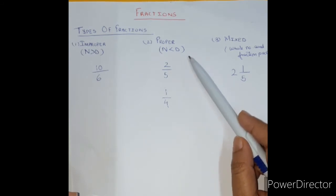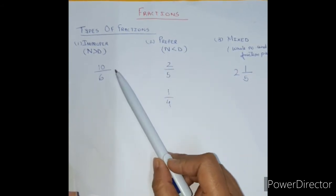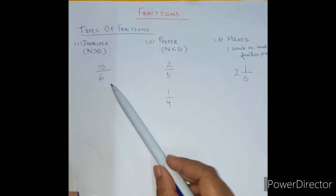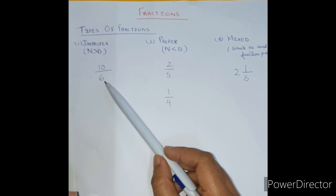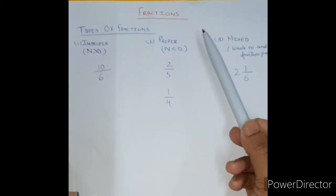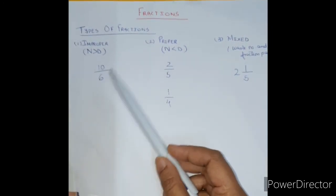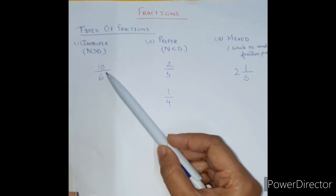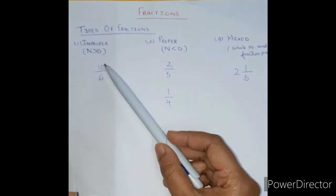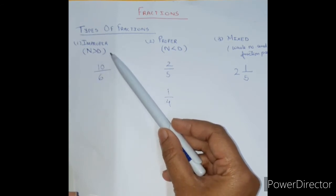Now let us check what improper fractions are. An improper fraction is the exact opposite of a proper fraction — the numerator is always greater than the denominator. For example, 10 upon 6: you cannot have 6 parts of a biscuit and give 10 from it — it does not occur in real life. This type of fraction, where the numerator is greater than the denominator, is called an improper fraction.